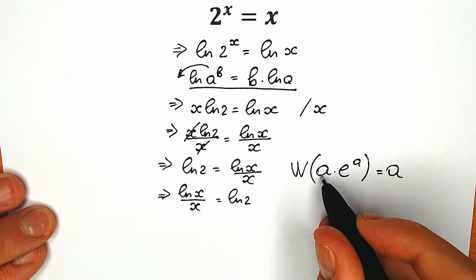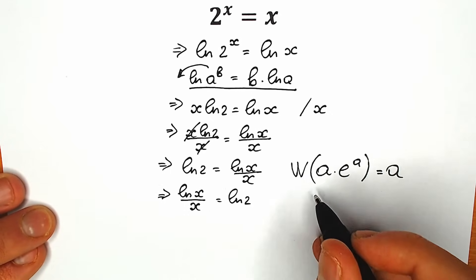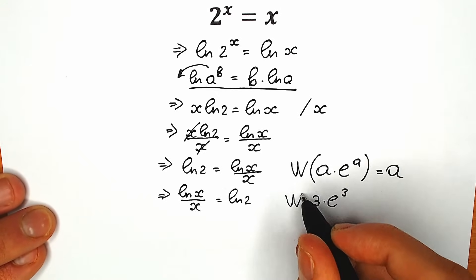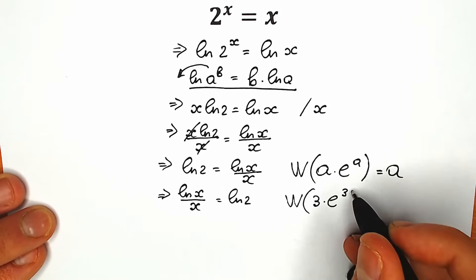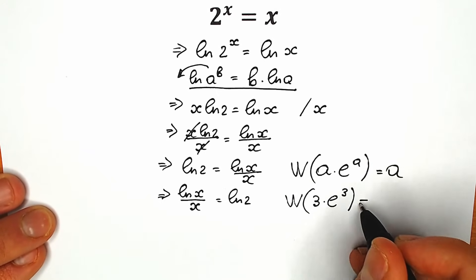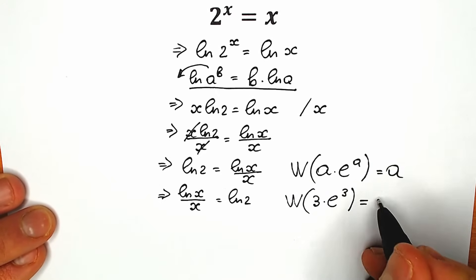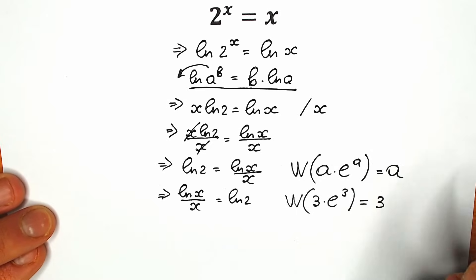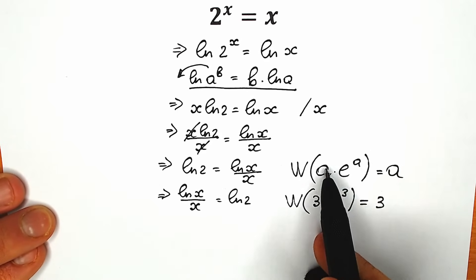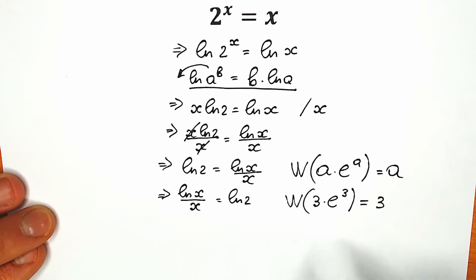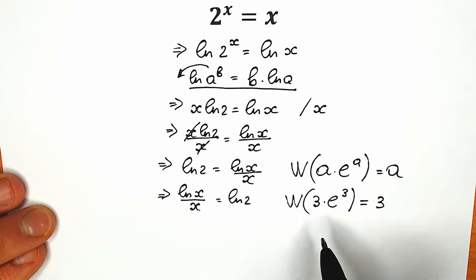For example, if a equals 3, then we have 3 times e to the power 3. When we apply the Lambert W function to this expression, we get only 3. The main requirement is that the expression before e and the power of e must be the same value.